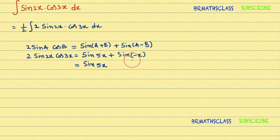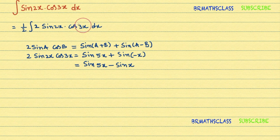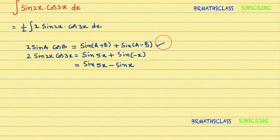In trigonometry, we know the formula that sin(−x) equals minus sin x. So sin(−x) becomes minus sin x, meaning 2 sin 2x times cos 3x equals sin 5x minus sin x. The product of two trigonometric functions has been written as the difference of two trigonometric functions using this formula.